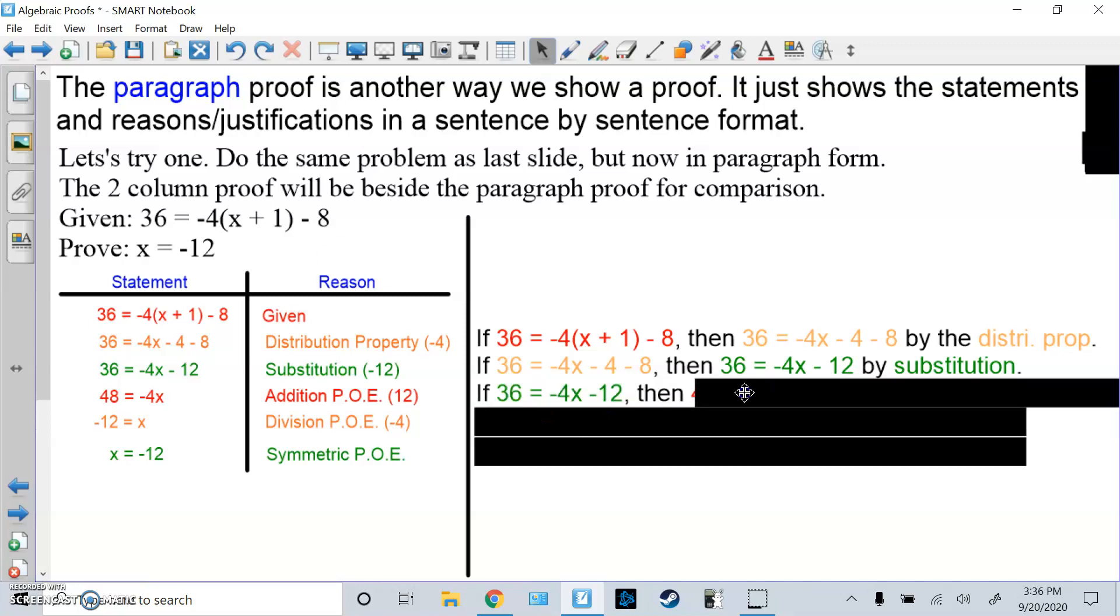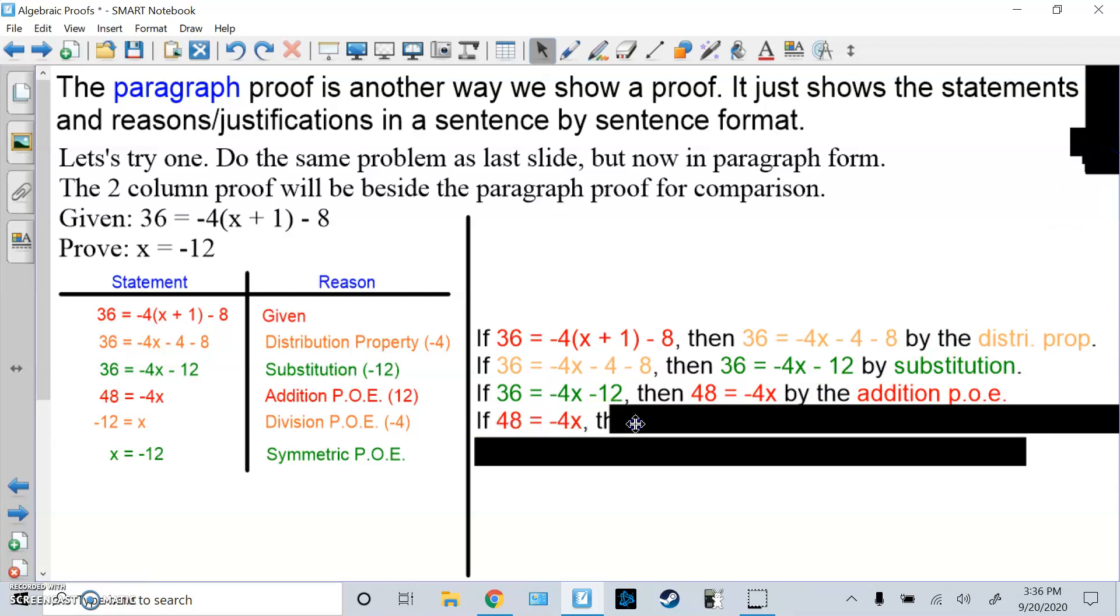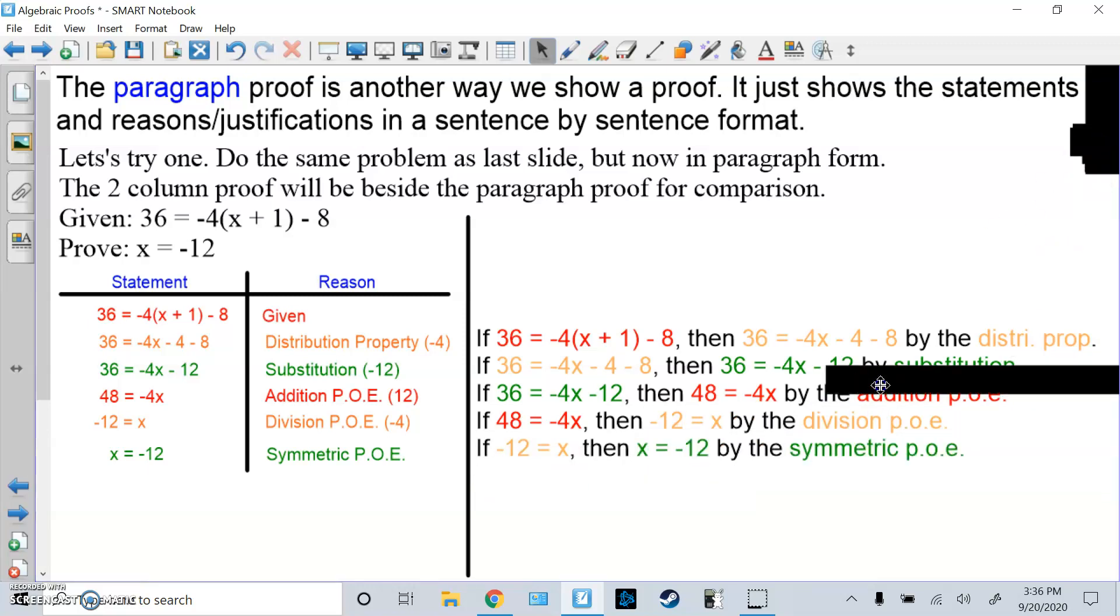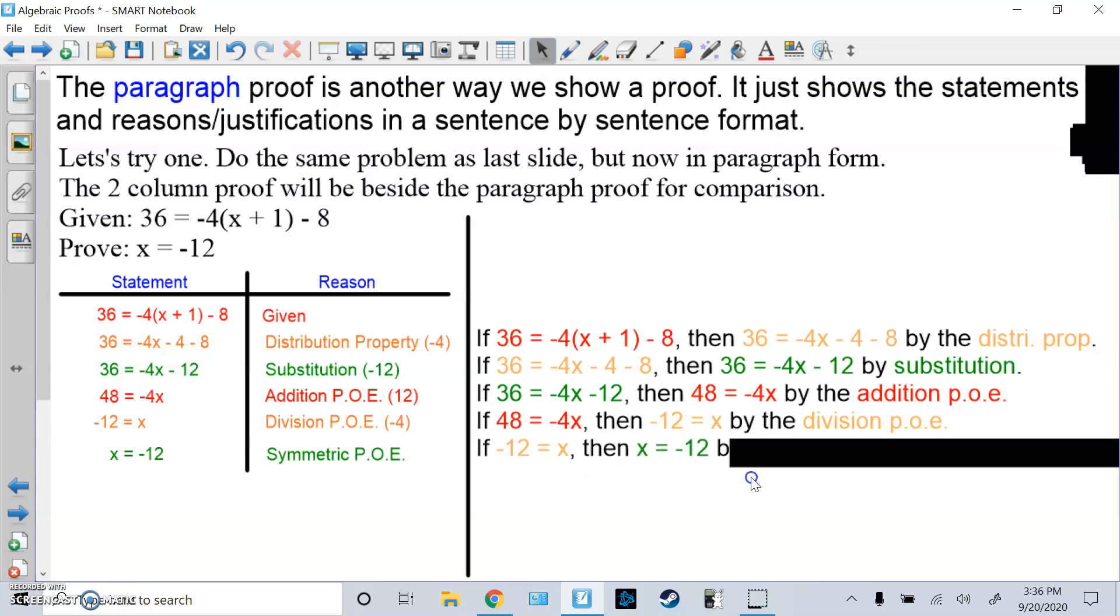Then you get that green problem. What would you do next? You would add 12 by addition property of equality. Then if you're at this red line, what do you do next? You get rid of the -4 by division. So by division property of equality. And then from that orange problem, you would flip it by the symmetric property of equality. You don't have to put the parentheses, the number. I just do it just to make it more obvious.